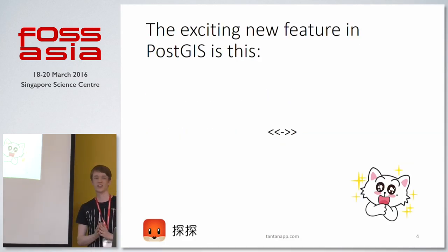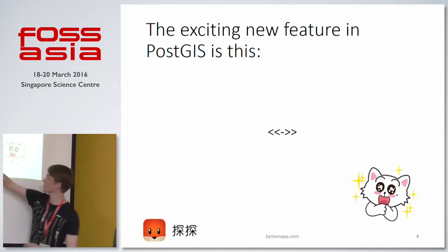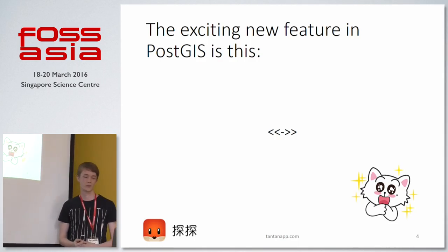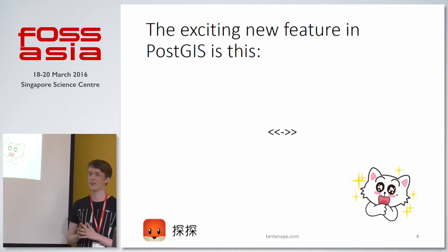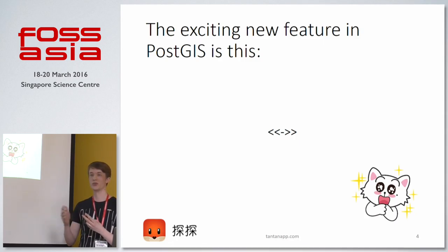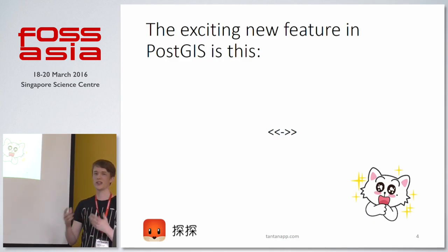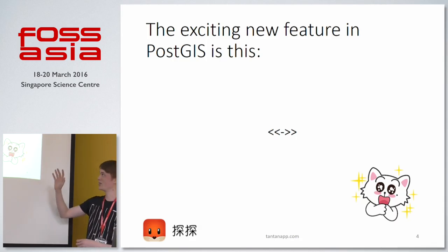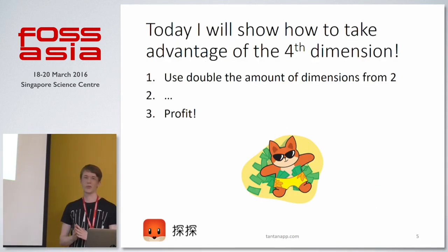So what is this new exciting functionality I'm presenting? Basically it's a new operator available in PostGIS 2.2. With it you can rank or order by four dimensions instead of the previous two dimensions in earlier versions of PostGIS, and this ranking can be done using an index, so it's pretty fast.